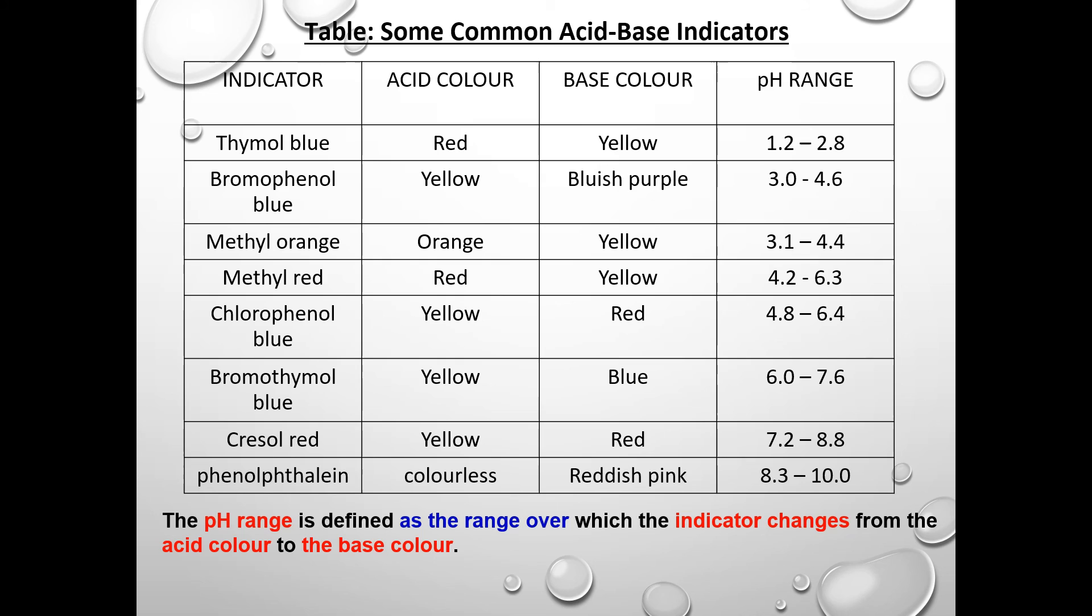In the table here you would see some common acid-base indicators used. Each indicator has its own color in the acidic medium and also its color in the basic medium. The pH range here is defined as the range over which the indicator will change its color from the acidic color to the basic color.